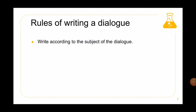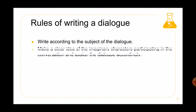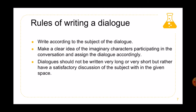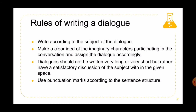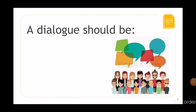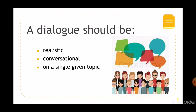Write according to the subject of the dialogue — no need to add irrelevant or extra information. Make a clear idea of the imaginary characters participating in the conversation and assign the dialogue accordingly. The dialogue should not be written very long or very short, but rather have a satisfactory discussion of the subject within the given space. Use punctuation marks according to the sentence structure — question marks, full stops, commas, or exclamatory marks according to the type of sentence. A dialogue should be realistic, conversational, on a single given topic, and correctly punctuated.